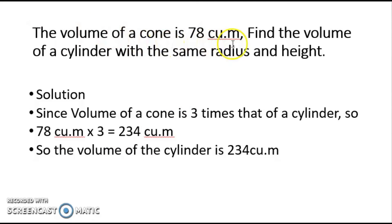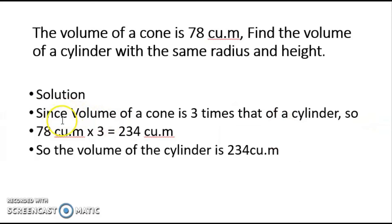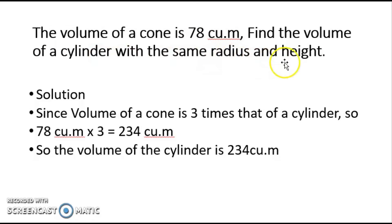Let's try to answer this problem: the volume of a cone is 78 cubic meters — find the volume of a cylinder with the same radius and height. Since 3 cones equals 1 cylinder, the volume of the cylinder is 78 cubic meters times 3, which equals 234 cubic meters. So we just multiply the volume of the cone by 3 to get the volume of the cylinder with the same radius and height.